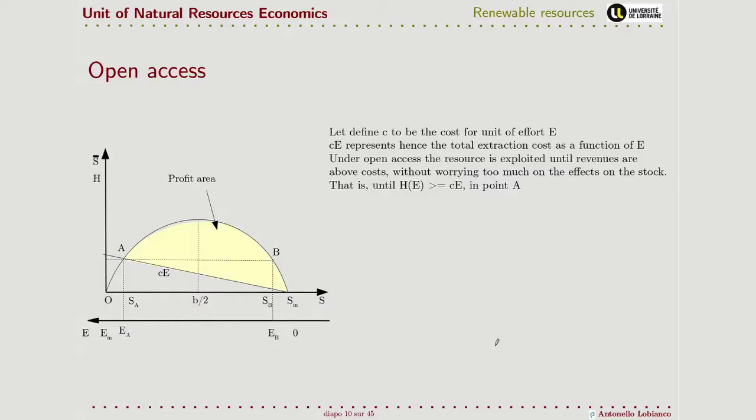If the resource is under open access, harvesting could lead to over exploitation of the resource, a problem that is known in the literature as tragedy of the commons. And let's see why. If we chart, so on this axis the stock, and on the same axis, but on the opposite side, the effort,